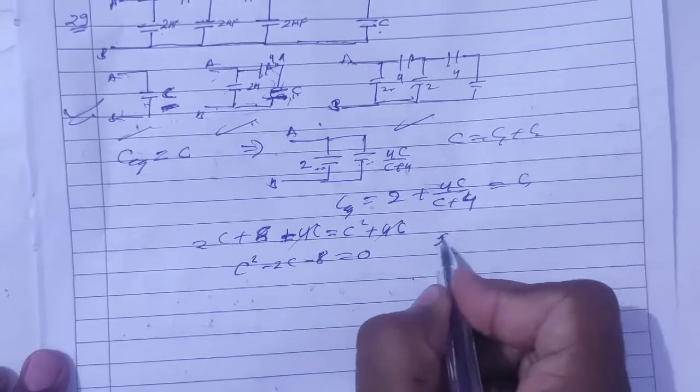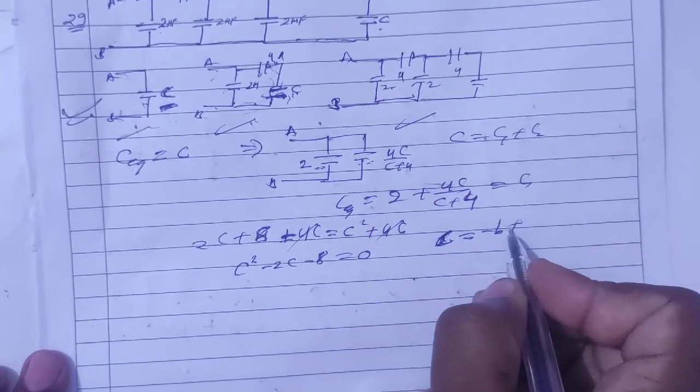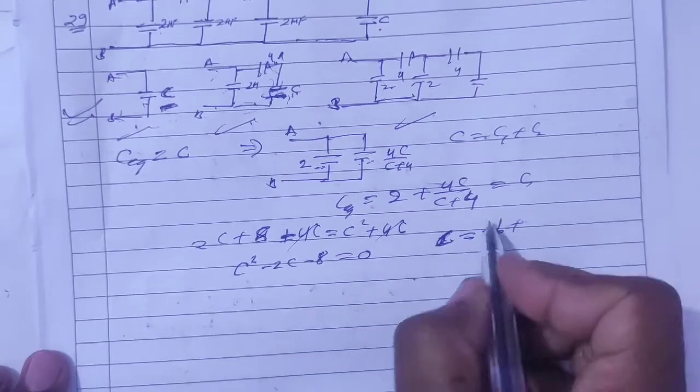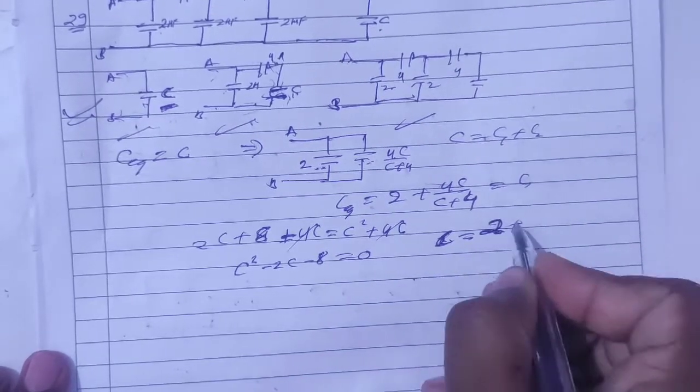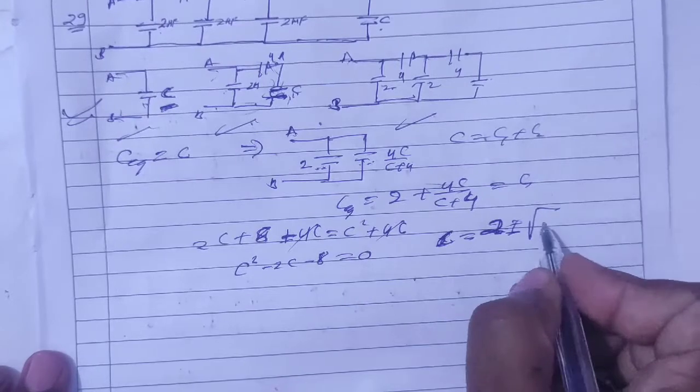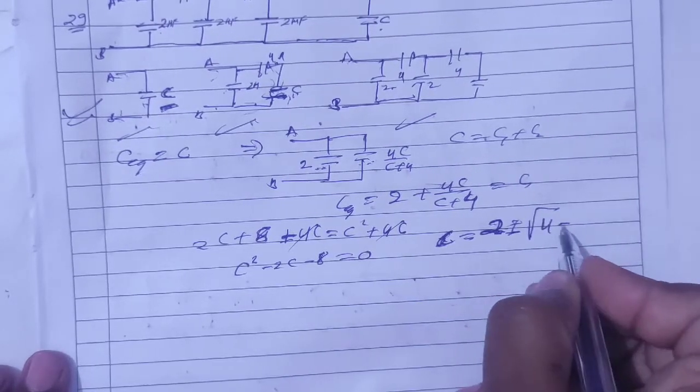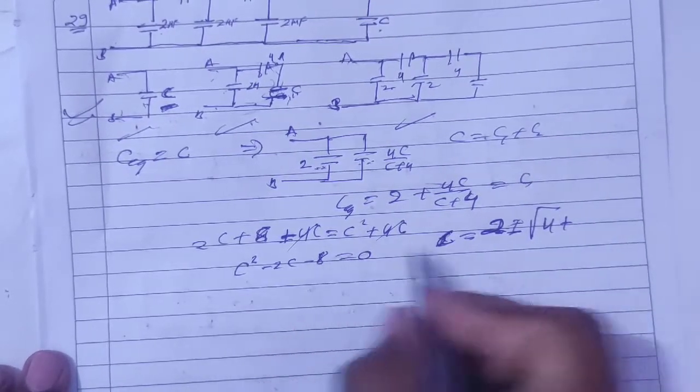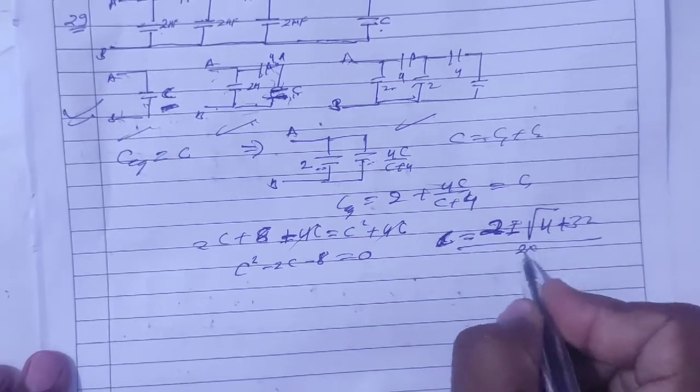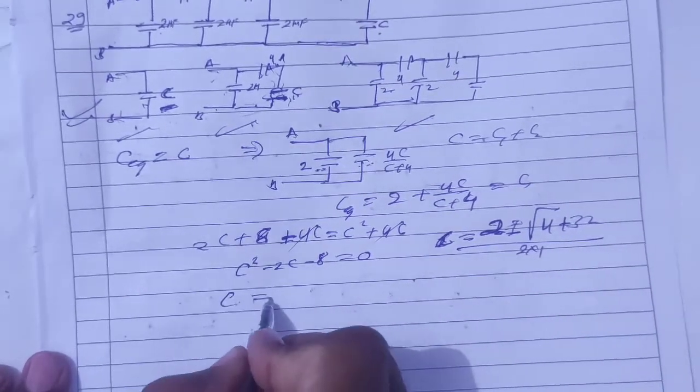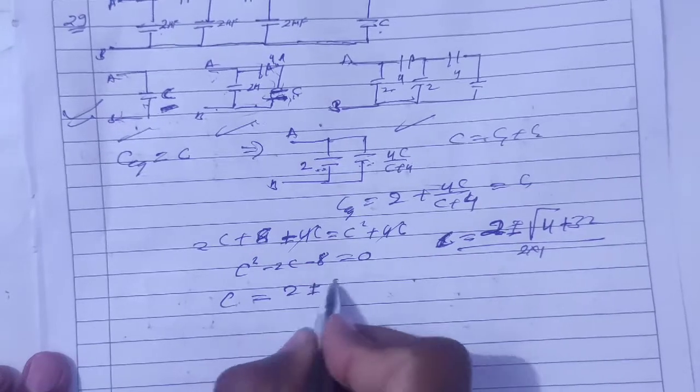The formula is C equals minus B plus minus root B square minus 4AC upon 2A. So here, minus B means plus 2, plus minus root B square which is 4, minus becomes plus so 32, upon 2A which is 2. So C is equal to 2 plus minus 6 by 2.